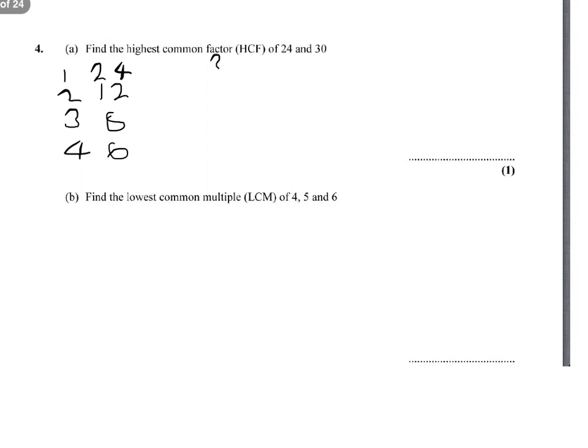Then look at 30. So 30 comes from 1 times 30, 2 times 15, 3 times 10, and 5 times 6. These are all the factor pairs.